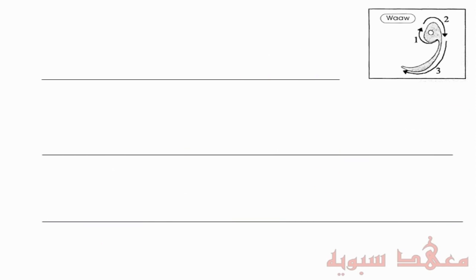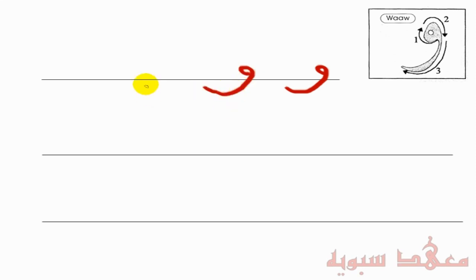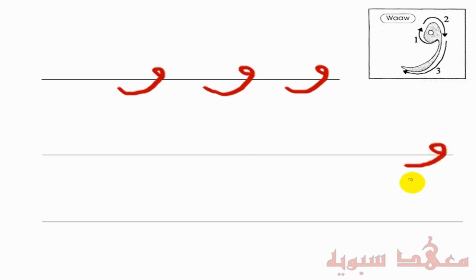Next letter: the Waw. The Waw is quite simple. You start from about here and just go like that. In the beginning of a word, it just does that and that's it — you can't join it to the next letter. It's isolated from the next letter.